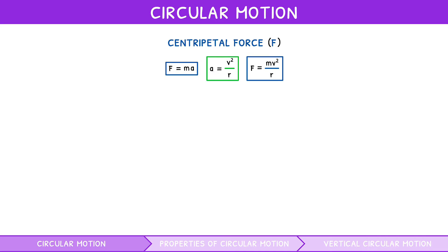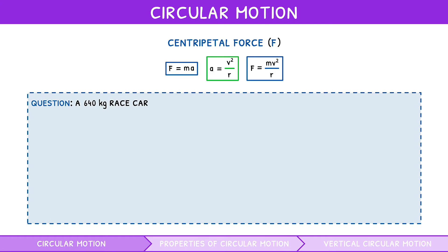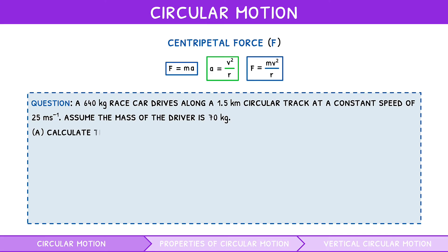Let's consolidate what we have learnt with a practice question. A 640kg race car drives along a 1.5km long circular track at a constant speed of 25m per second. Assume the mass of the driver is 70kg. Part a: Calculate the centripetal acceleration. Part b: Calculate the centripetal force and state its direction.